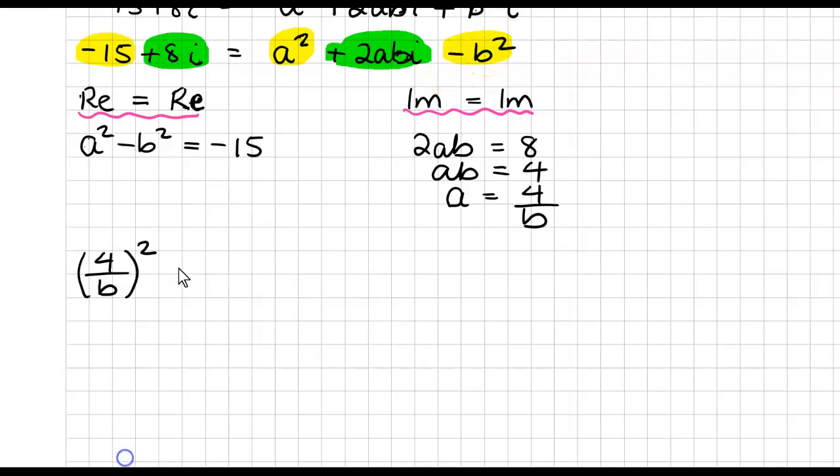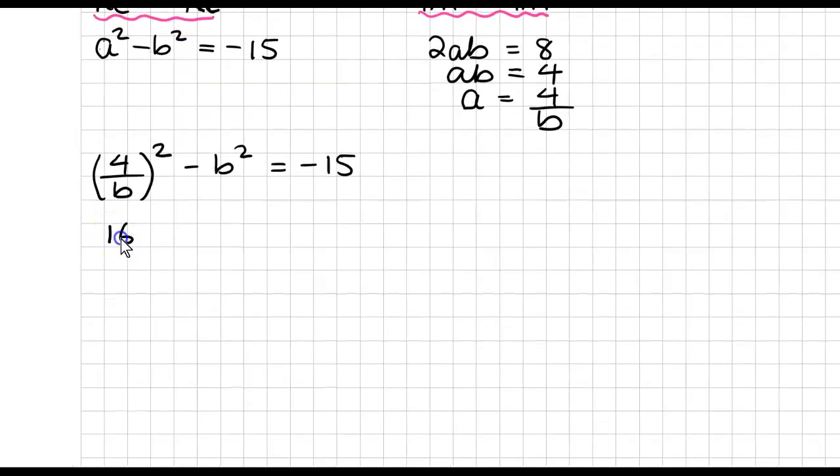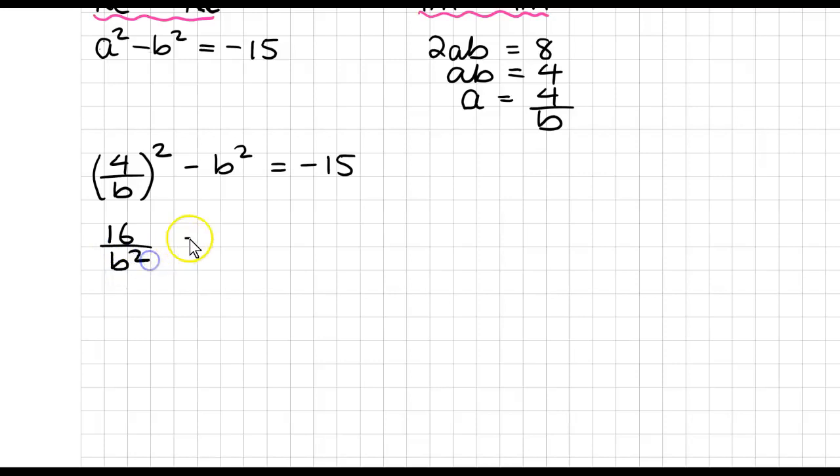So minus B squared equals minus 15. So that's equal to 16 over B squared, minus B squared is equal to minus 15.